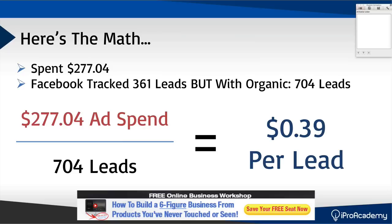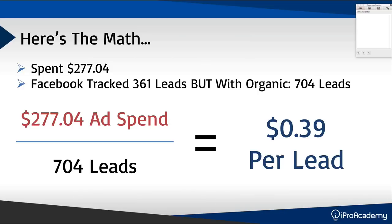Now here's the math: I've spent $277.04. Facebook tracked 361 leads, but with my organic viral activity, I actually got 704 leads. So if I take $277.04 divided by 704 leads, I'm actually paying $0.39 per lead. That's pretty crazy — $0.39 per lead right now off of Facebook, even with all the competition on Facebook right now, I'm still able to get $0.39 per lead. And keep in mind, I did this all in just three days.